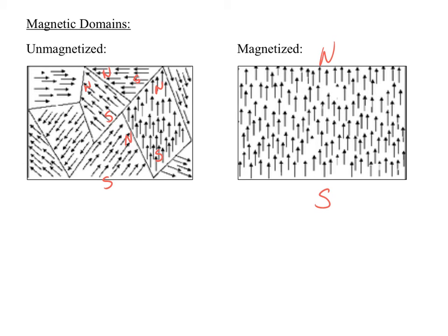You can actually calculate the magnetic field — though we're not going to get into this — using the formula where it's proportional to the current, the number of coils, and inversely proportional to the length, with a constant in front. If you're considering taking a subject test in physics, you'd use this math. We're not going to do this mathematically, but you should still understand the relationships: current I and number of loops N are directly related to B, while length L is indirectly related.